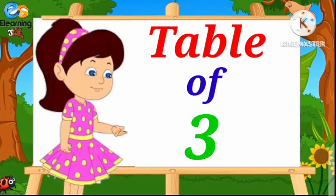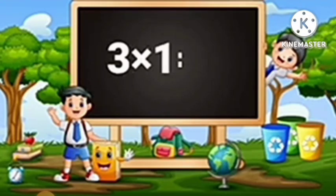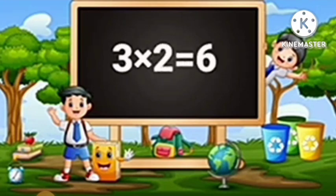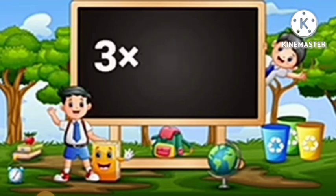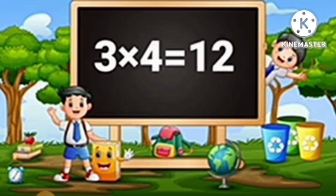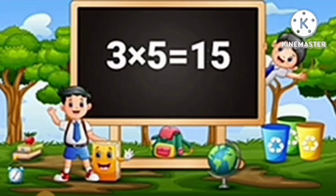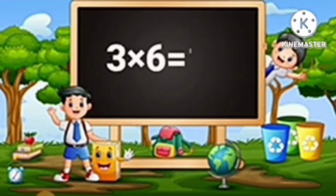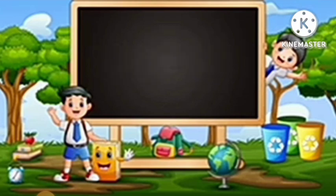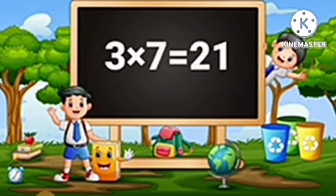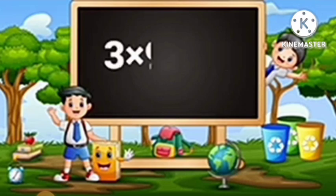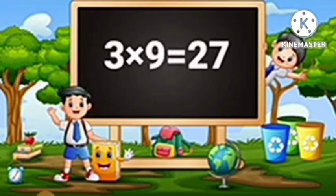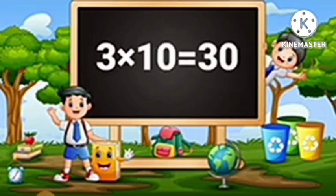Table of Three. Three-One's are Three. Three-Two's are Six. Three-Three's are Nine. Three-Four's are Twelve. Three-Five's are Fifteen. Three-Six's are Eighteen. Three-Seven's are Twenty-One. Three-Eight's are Twenty-Four. Three-Nine's are Twenty-Seven. Three-Ten's are Thirty.